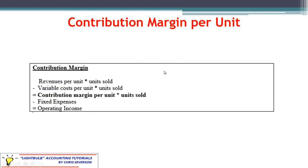Now let's look at a new term: contribution margin, which is key to understanding cost-volume-profit analysis. We take revenues per unit multiplied by the number of units sold, then subtract variable costs per unit multiplied by the number of units sold. These variable costs include both product variable costs and variable period costs — not just product costs. That gives us the contribution margin per unit, and multiplying by the number of units sold gives us the total contribution margin. After that, we subtract fixed expenses to arrive at operating income.